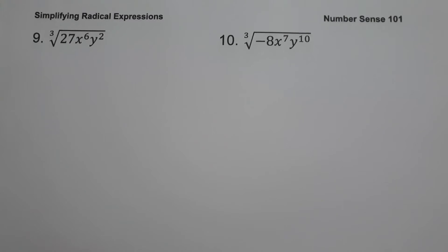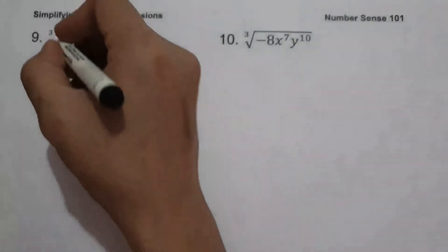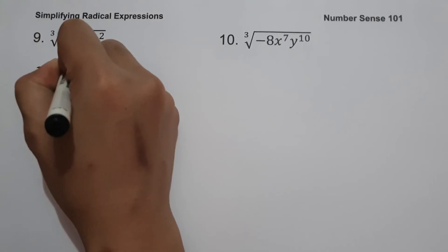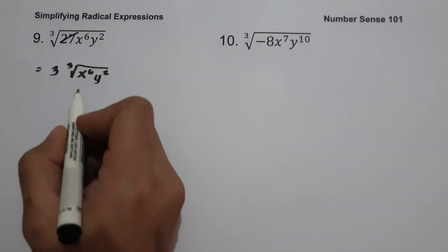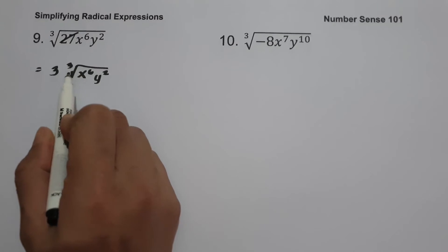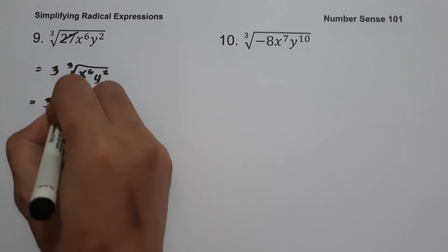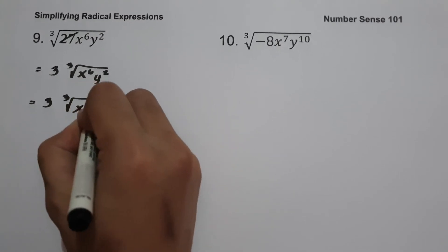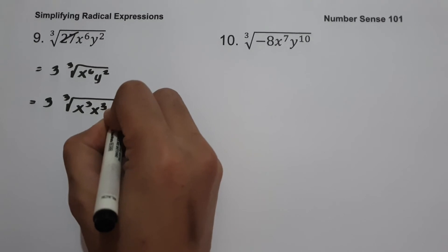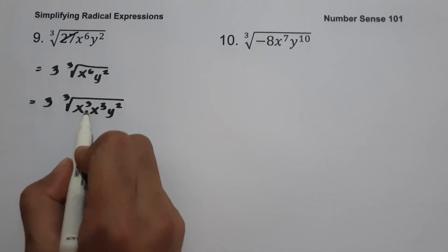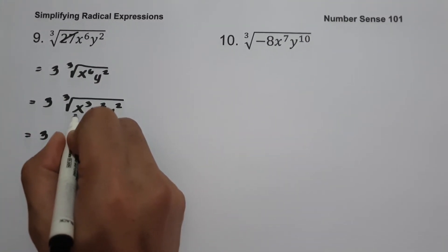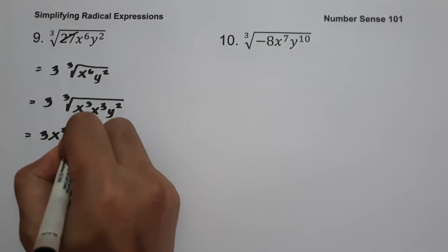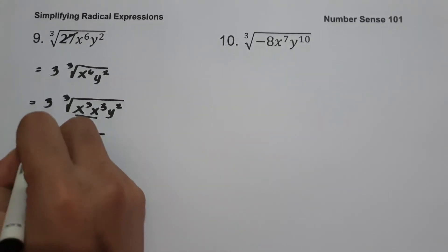On example number 9, we have cube root of 27x raised to 6, y squared. To simplify, the cube root of 27 is 3. Then we divide the exponents of x and y by 3 because our index is 3. We rewrite x raised to 6 as x cubed, x cubed — adding those gives 6. Since we have 2 x-cubed terms we get x squared. The remaining radical is cube root of y squared. So our answer is 3x squared, cube root of y squared.